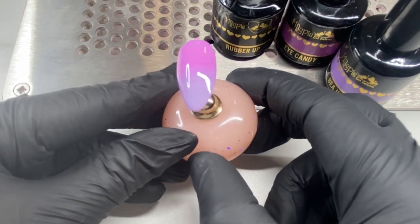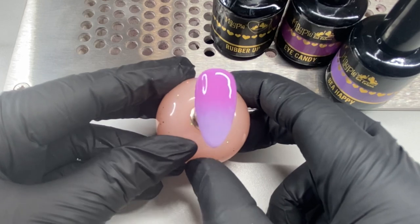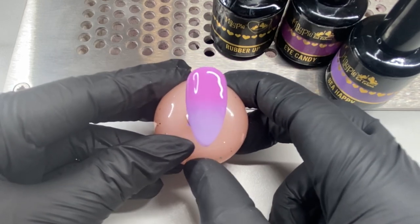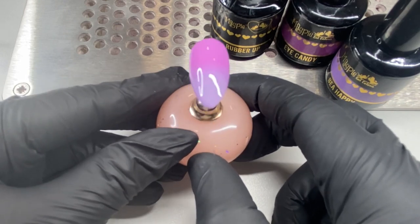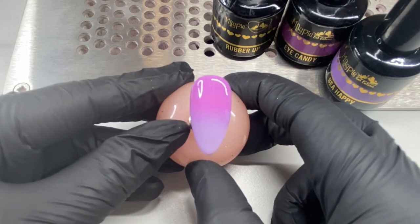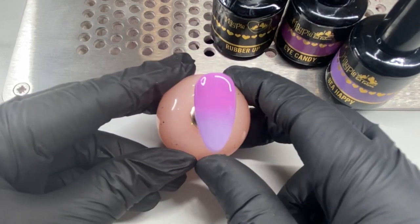This is the finished look of our ombre nail. I've used Eye Candy and Be Happy mixed with Rubber Up to create this perfect ombre look. You can use any color in the Magpie range to create whatever color ombre you'd like. If you recreate this design, please send me a picture or give me a tag as I'd love to see your color options. Thank you so much for watching!